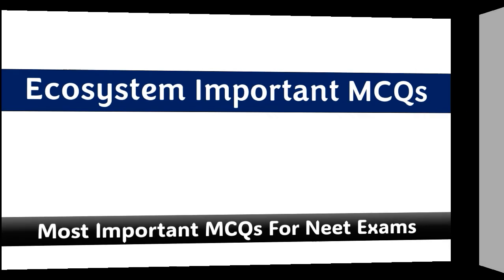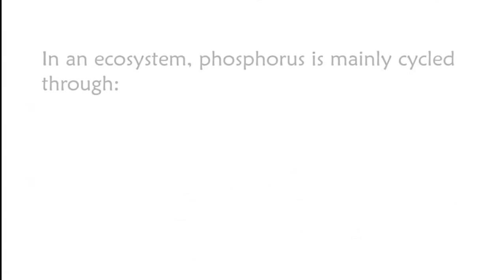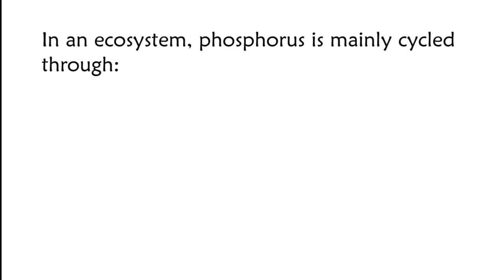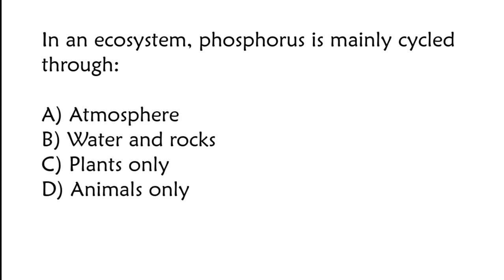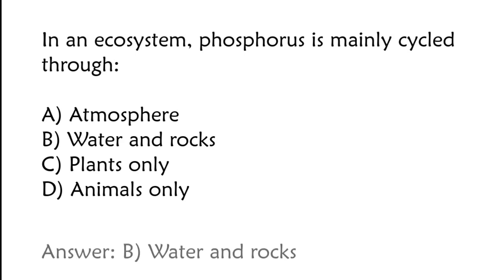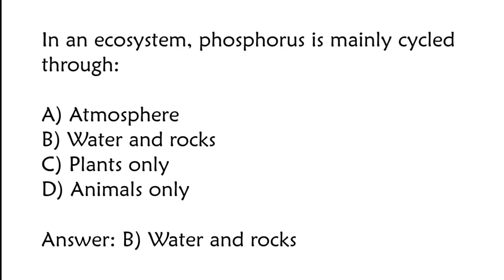Ecosystem Important MCQs. In an ecosystem, phosphorus is mainly cycled through: A) atmosphere, B) water and rocks, C) plants only, D) animals only. The correct answer is option B, water and rocks.